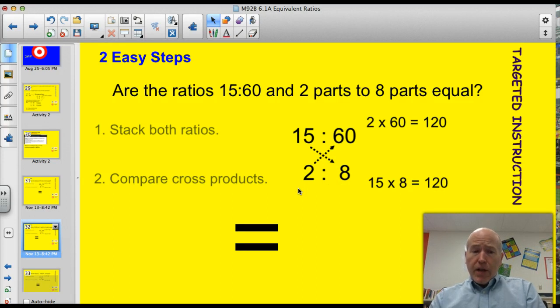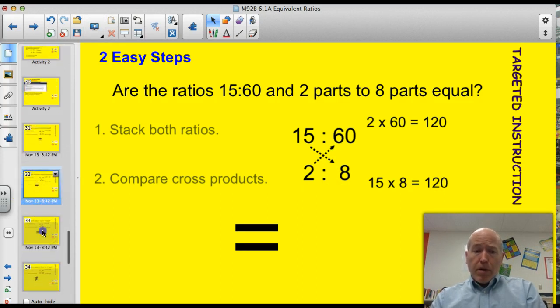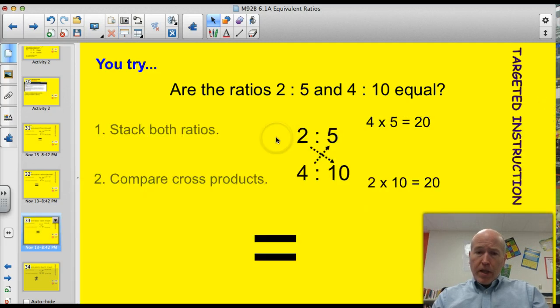I think it's time for you to try one. Go ahead and give this question a shot. Go. Alright. Are 2 to 5 and 4 to 10 equal? Let's see if your work matches mine. I stacked them. 2 to 5, 4 to 10. I compared the cross products. 4 times 5 is 20. 2 times 10 is 20. Sweet! I love it when a plan comes together.